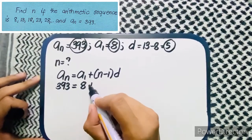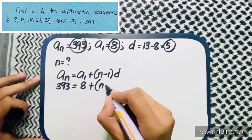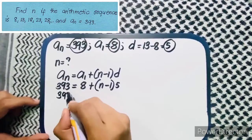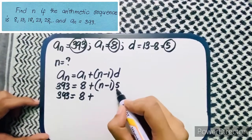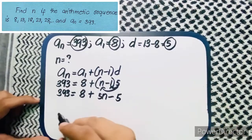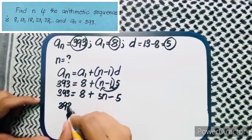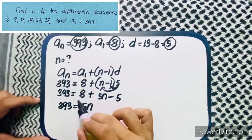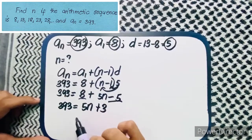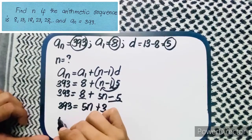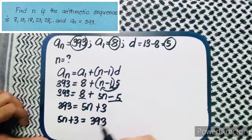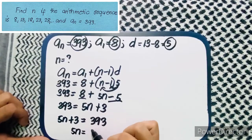So a sub n is 393, equals a sub 1 which is 8, plus n minus 1 times d which is 5. Next: 393 equals 8 plus 5n minus 5. Then 393 equals 5n plus 3, combining 8 minus 5 to get 3. We can rewrite this as 5n plus 3 equals 393.